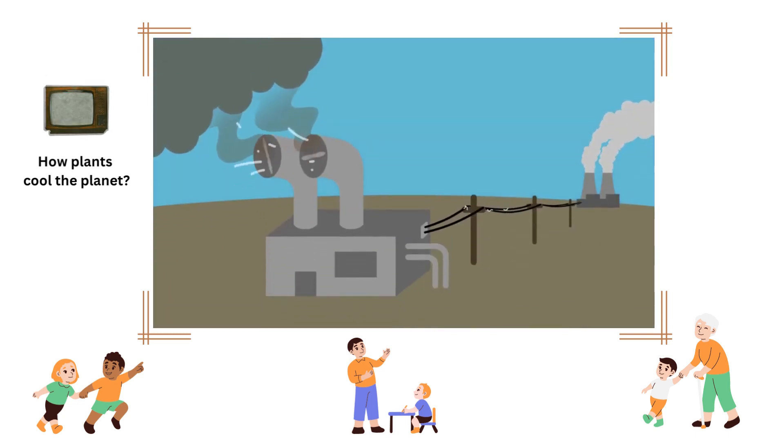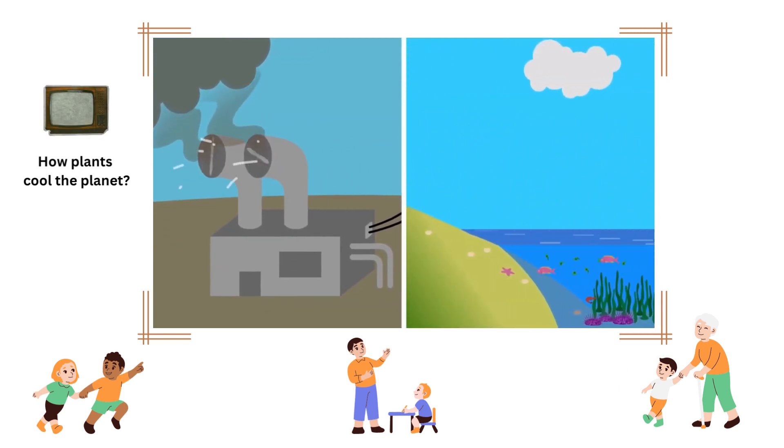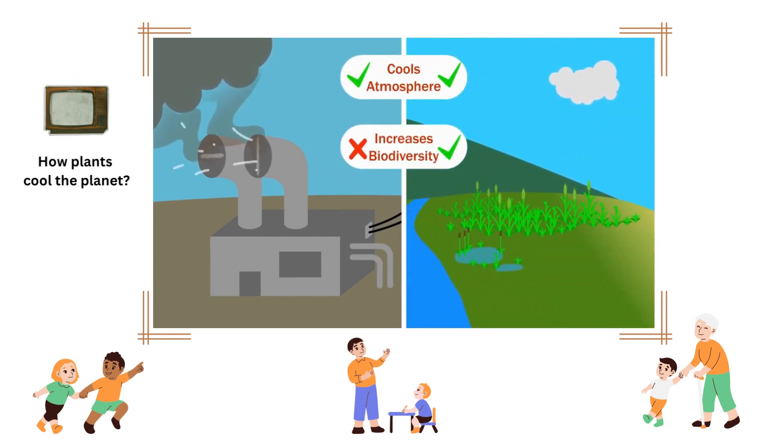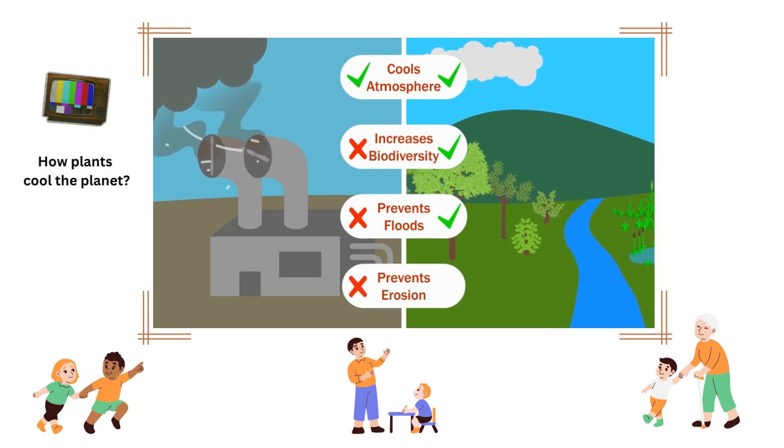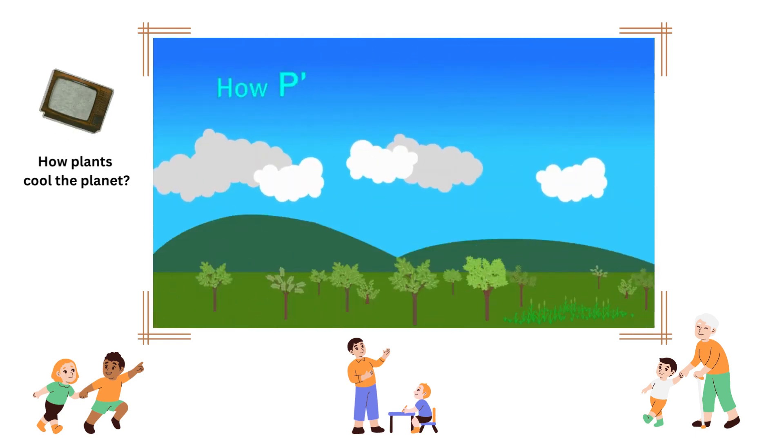Unlike high-tech geoengineering schemes, forests, wetlands, grasslands, and marine ecosystems bring numerous benefits beyond just cooling the atmosphere. They increase biodiversity, they can prevent floods, and prevent erosion. But for now, let's talk about how they stabilize the weather and promote cooling.